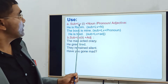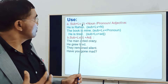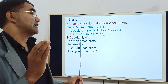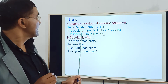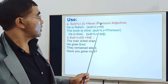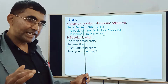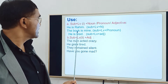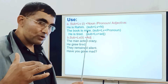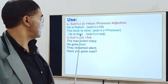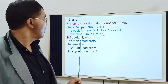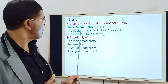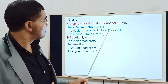When we use the linking verbs from list one — that means am, is, are, was, were, be, being, been — we can use a noun complement, pronoun complement, or adjective complement after them. For example: 'he is Rohim' — here 'Rohim' is the noun complement. 'The book is mine' — here 'mine' is the pronoun complement. 'He is tired' — here 'tired' is the adjective complement.